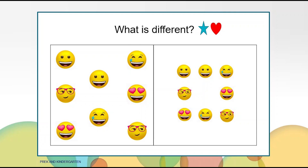What is different in both pictures? It is different because the first picture has big emojis and the second picture has small emojis. It is different because the first picture has five rows and the second picture has three rows. Can you think of anything else that is different?